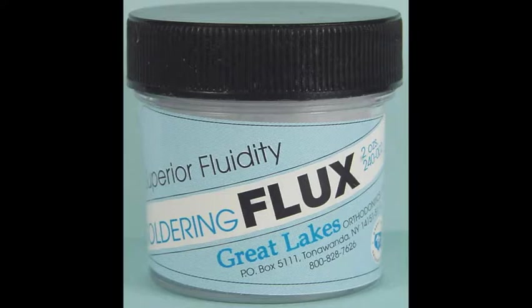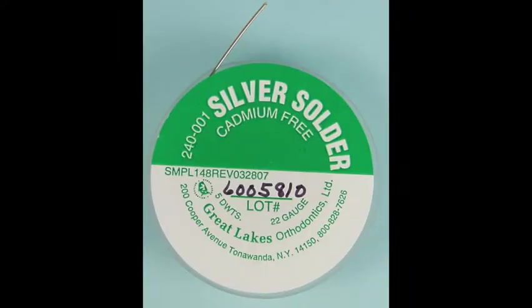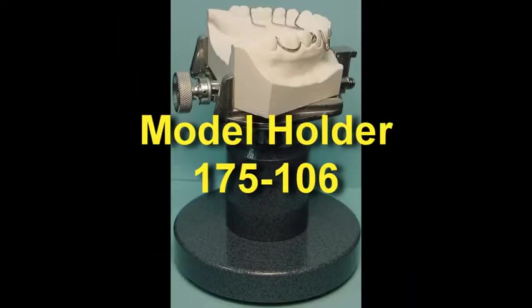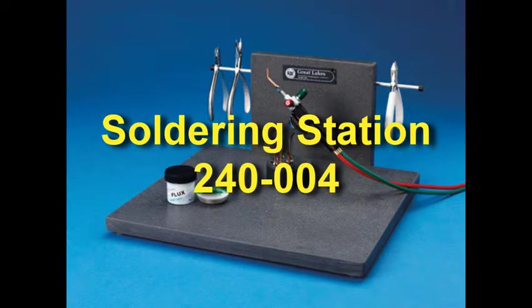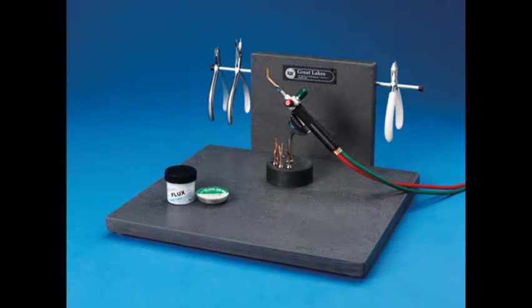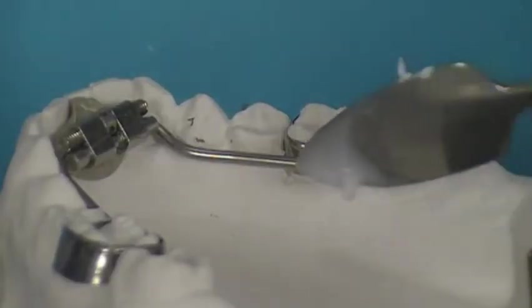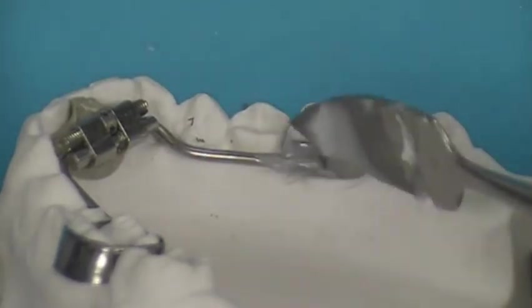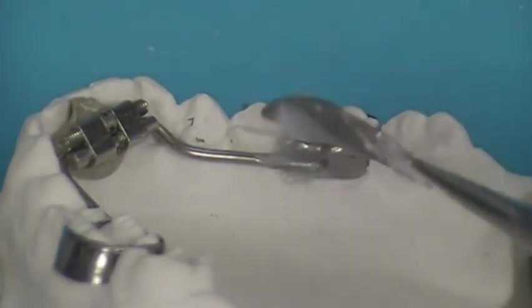Additional soldering equipment such as Great Lakes flux, solder, model holder, and soldering station are recommended. To start the soldering process, a creamy layer of Great Lakes flux is applied to metal surfaces to be soldered, including solder.